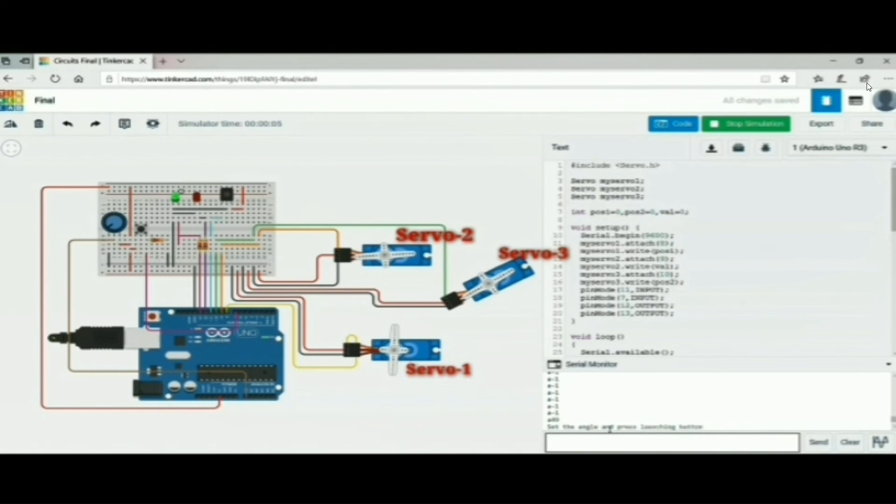Red LED should turn off and servo 1 should rotate from 0 to 90 degree to lock the launching pad. Now it is asking to set the angle and press the launching button. Now angle can be set by the potentiometer which is connected to servo 2. Now I am setting the angle. And if we press the button,